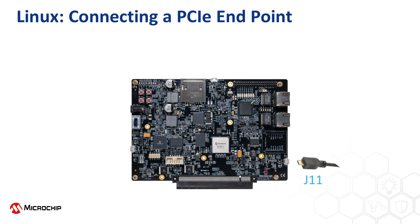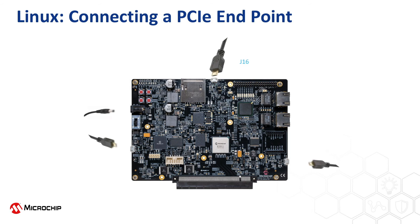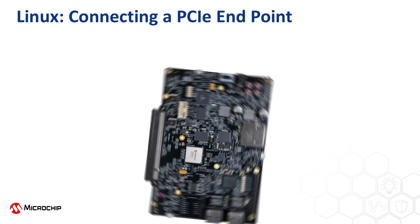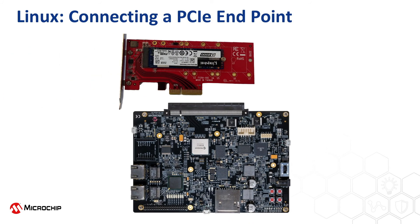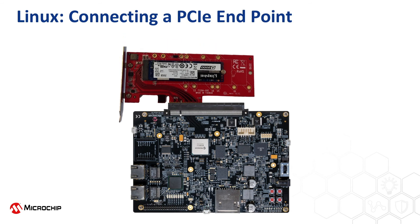If you need to program the EMMC, you can use a micro-USB cable connected to port J16 at the top of the board. All of the connections are shown here. Finally, to connect a PCIe endpoint, connect this to the PCIe root port connector on the board.